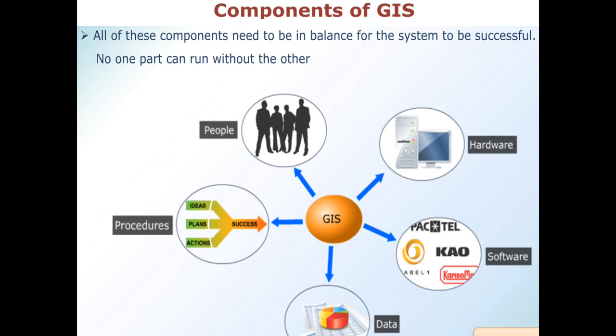Now coming to the components of GIS, which is a very important concept. Basically there are five types of components of GIS: hardware, software, data, procedure, and people.